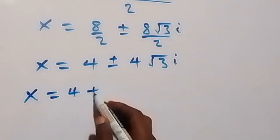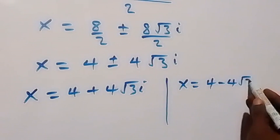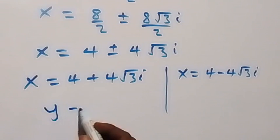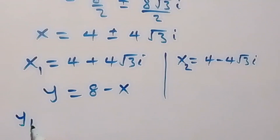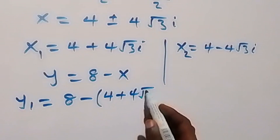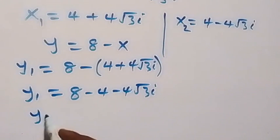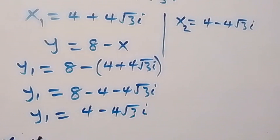So we have two solutions: x1 equals to 4 plus 4 root 3 i, or x2 equals to 4 minus 4 root 3 i. To get the corresponding y values using y equals to 8 minus x: y1 equals to 8 minus x1, which is 8 minus (4 plus 4 root 3 i), giving y1 equals to 4 minus 4 root 3 i.